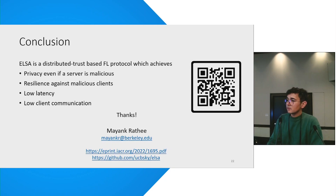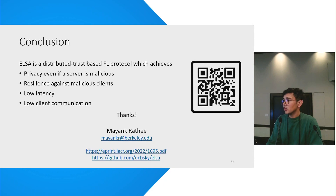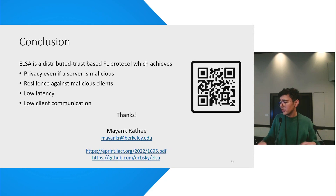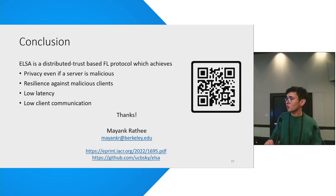Follow-up: If the hash does not match, the other server will think server one is not performing correctly — but it could be either the client cheating or the server being malicious. In our protocol, we don't distinguish between the two cases. What we say is that if there's a hash mismatch, the client under discussion should be taken out of the protocol because that client does not want to participate anymore. The rest of the clients still participate — so you don't abort the whole protocol, you just take that client out.